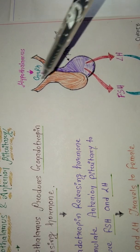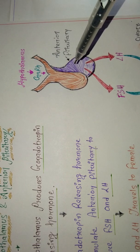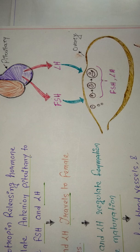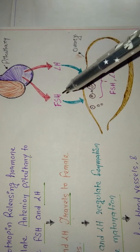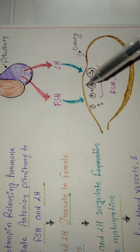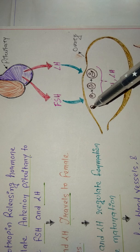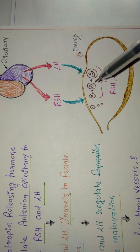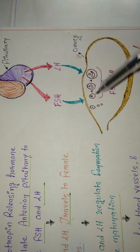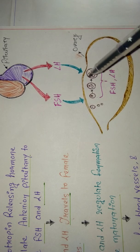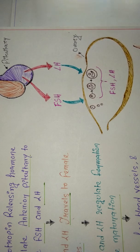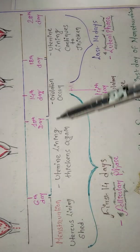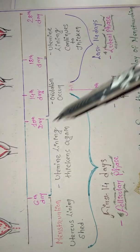To summarize the follicular phase process: the hypothalamus produces GnRH, which signals the anterior pituitary to produce FSH and LH. These hormones travel to the ovaries, where thousands of follicles are present. FSH and LH help one follicle mature and produce an egg. If you have any doubts about the follicular phase — the first 14 days — please let me know in the comments.